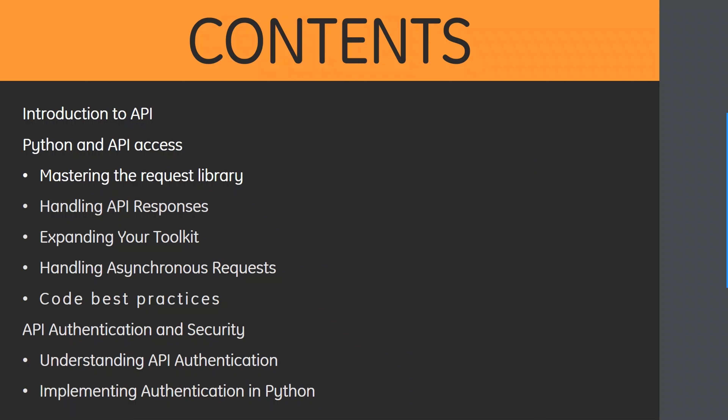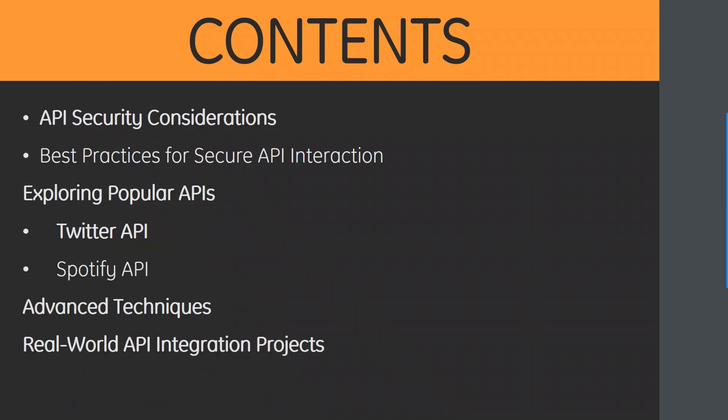For contents, we will be going through the introduction of API and Python, API access which includes mastering the request library, handling API responses, expanding your toolkit, handling asynchronous requests, and code best practices. Later we have API authentication and security, API security considerations, best practices for secure API interaction, exploring popular APIs such as Twitter and Spotify, advanced technicals, and real-world API integration projects.